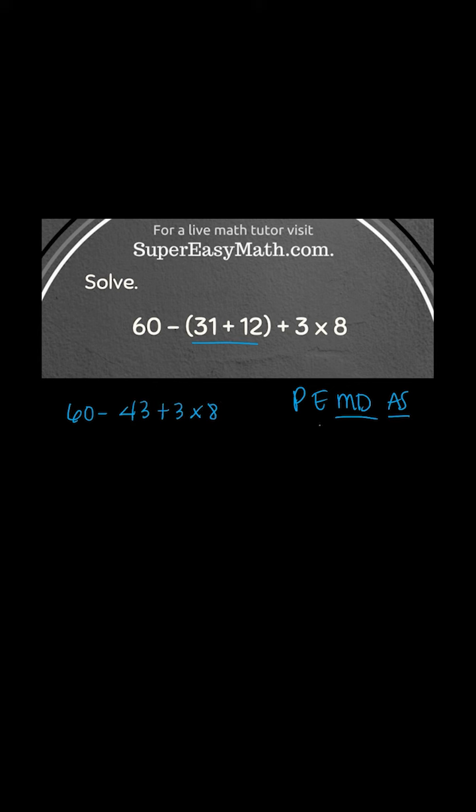Now I'm going to work from left to right. Do I have any exponents? Nope. Do I have any multiplication or division? It doesn't matter which one you see first. Yes, I do. 3 times 8. So I have 60 minus 43 plus 24.